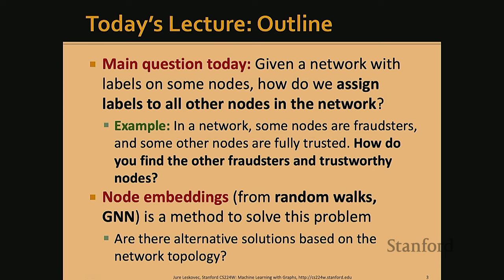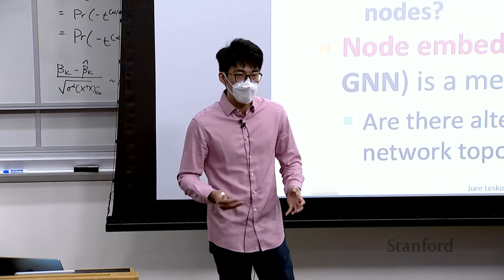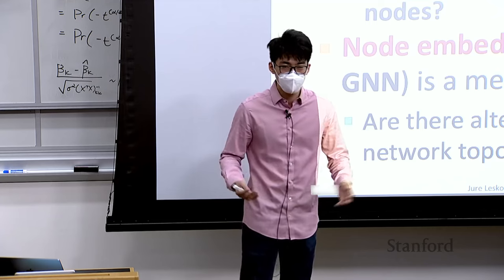This setting has been investigated through embedding-based methods. Node embeddings can be generated from random walks like node2vec and DeepWalk, or using graph neural networks based on neighborhood aggregation. We have seen GNNs in the past five lectures. The key question today is whether there's an alternative way to make predictions on networks — based on what we know — to predict unknown node labels.